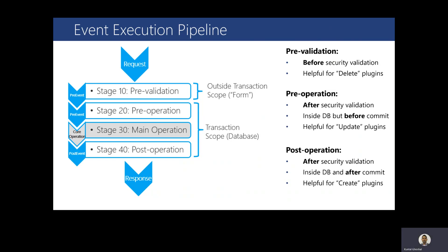Pre-event or pre-operation, Stage 20, executes within the database transaction. If you want to do pre-validation comparing user-entered data against something inside the platform, you can register at pre-operation or Stage 20. You can also throw an exception from this stage, in which case the plugin transaction will not be committed and the operation will not be completed.